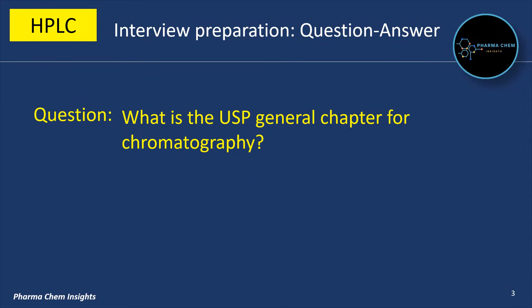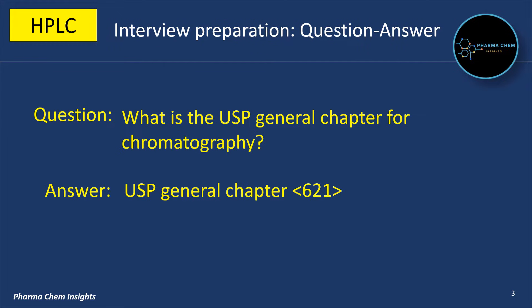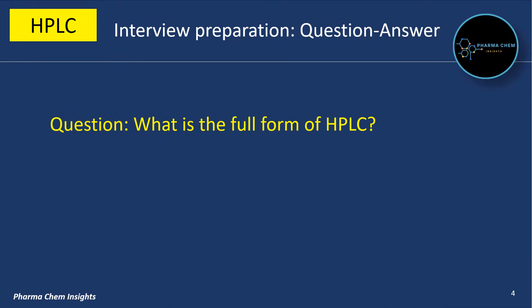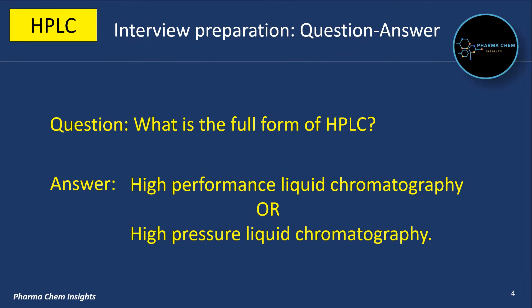Next question: What is the USP general chapter for chromatography? USP general chapter is 621. What is the full form of HPLC? HPLC stands for high performance liquid chromatography, or it is also called high pressure liquid chromatography.